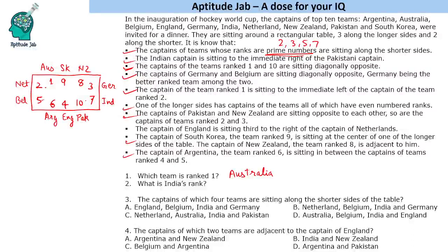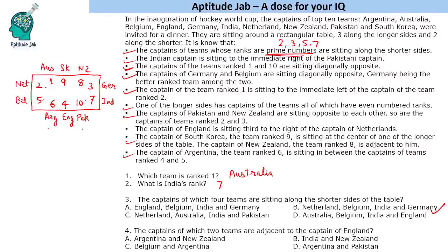Now answering the questions: Which team is ranked 1? It is Australia. What is India's rank? India's rank is 7. The captains of which 4 teams are sitting along the shorter sides of the table? Germany, India, Belgium, and Netherlands. The captains of which 2 teams are adjacent to the captain of England? The captain of England is surrounded by the captains of Argentina and Pakistan. That is option D.